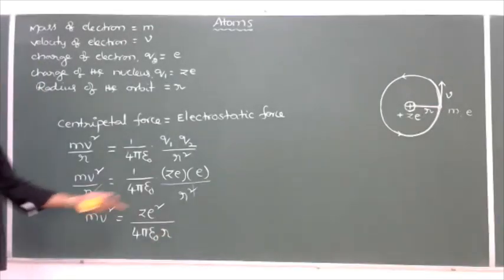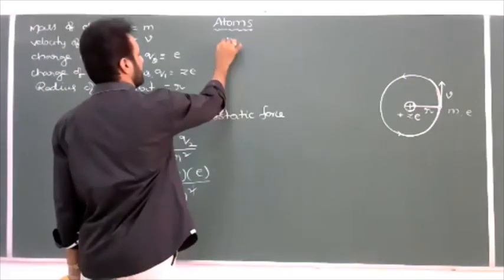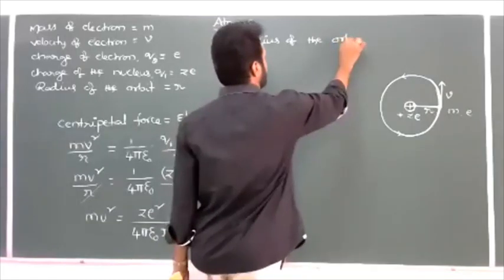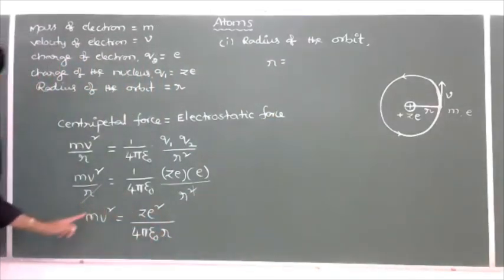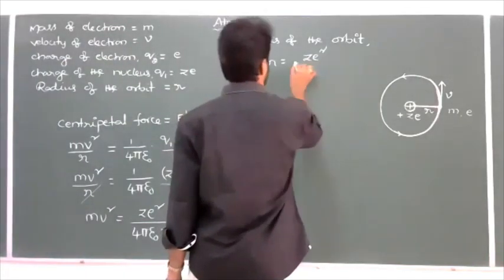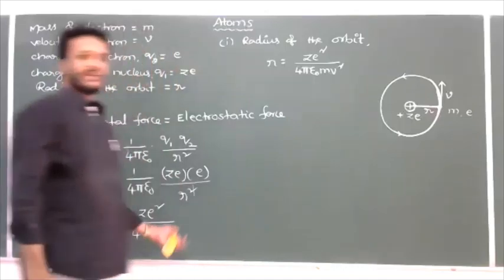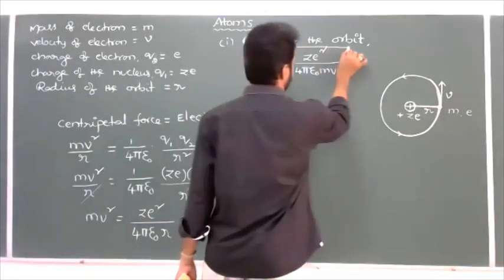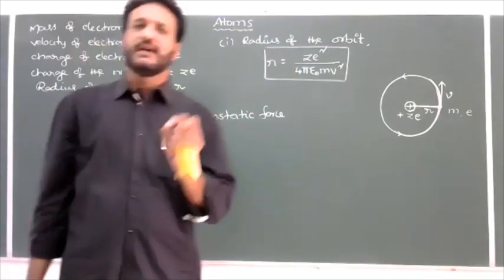From this formula we may calculate the radius of the orbit and also the speed of electron. If you want to calculate the radius of the orbit: take r to the left side and mv² to the right side, giving r = Ze²/(4πε₀mv²). This is the formula for radius of the circular orbit of an electron revolving around the nucleus of any atom. For example, for a hydrogen atom, atomic number Z is equal to 1, so r = e²/(4πε₀mv²).